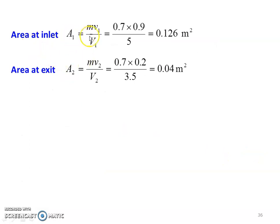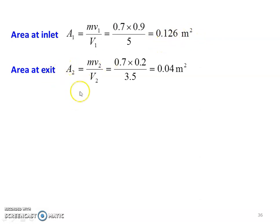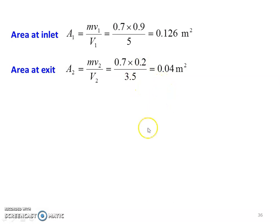Area at inlet A1 = M × specific volume V1 / velocity V1 = 0.7 × 0.9 / 5 = 0.126 meter square. Area at exit A2 = M × specific volume V2 / velocity V2 = 0.7 × 0.2 / 3.5 = 0.04 meter square.